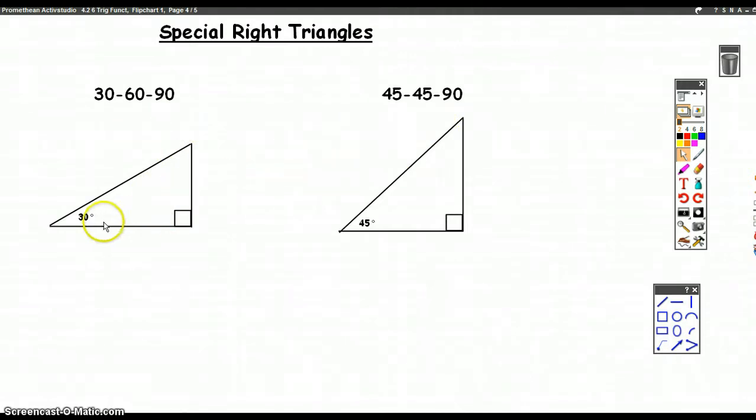So of course, what that means is if you have a right triangle and one of the angles is 30 degrees, then since the angles add up to 180 degrees, we know that's got to be 60 degrees, right? And of course, if that's 45, then that would also be 45.